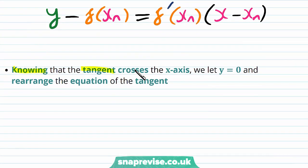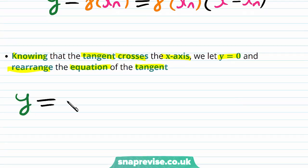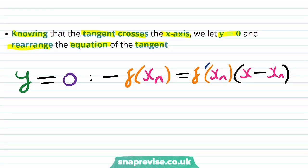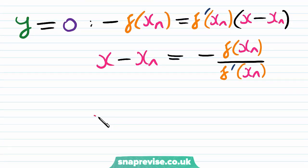Knowing that the tangent crosses the x-axis, we let y equal zero and rearrange the equation for the tangent. We set y equal to zero, and so we have minus f(xn) is equal to f'(xn) multiplied by x minus xn. Then we rearrange to get x: dividing gives x minus xn equals minus f(xn) over f'(xn). Finally, we add xn to both sides, and we get that x is equal to xn minus f(xn) over f'(xn).